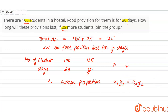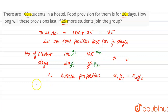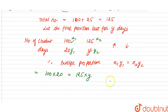In inverse proportion, x1 × y1 = x2 × y2. Here x1 = 100, y1 = 20, x2 = 125, and y2 = y. So this gives us 100 × 20 = 125 × y. Transferring 125 to the left-hand side: y = 100 × 20 divided by 125.